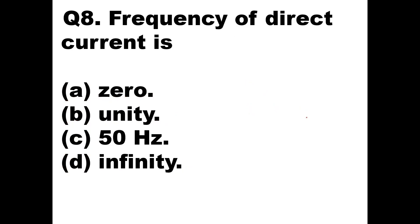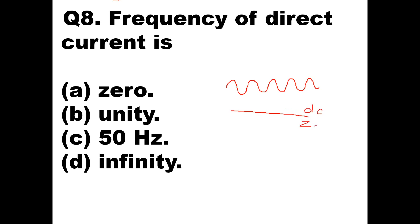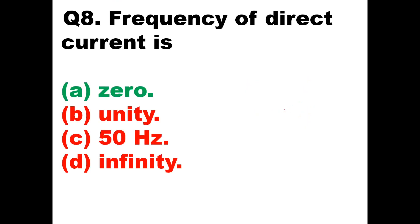Question 8: Frequency of direct current is — ? Frequency is the number of cycles per second for an alternating quantity. For direct current, it is only a straight line — there are no cycles, no alternating quantity, no positive or negative cycles. So the frequency of direct current is 0. Option A is the answer.